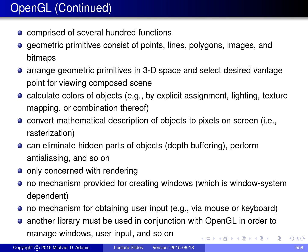OpenGL can also eliminate hidden parts of objects by applying a technique known as depth buffering or z-buffering, and can perform anti-aliasing. However, it's important to understand that OpenGL is only concerned with rendering — not anything else. It has no window management capabilities; you cannot use OpenGL to create or destroy windows. It also has no mechanism for obtaining user input, such as from a mouse, keyboard, or trackball.